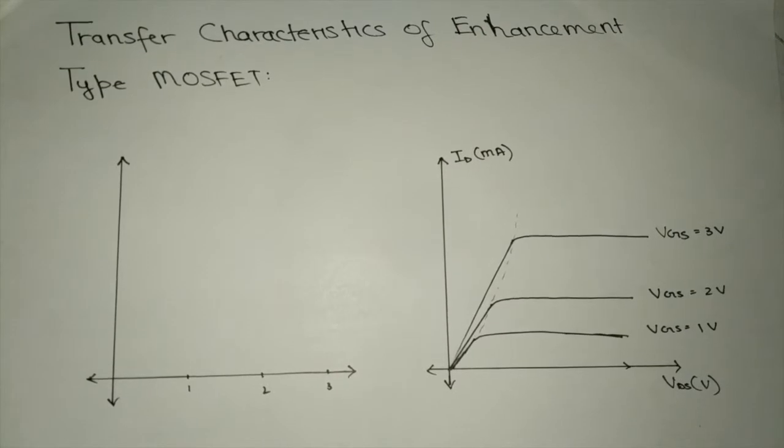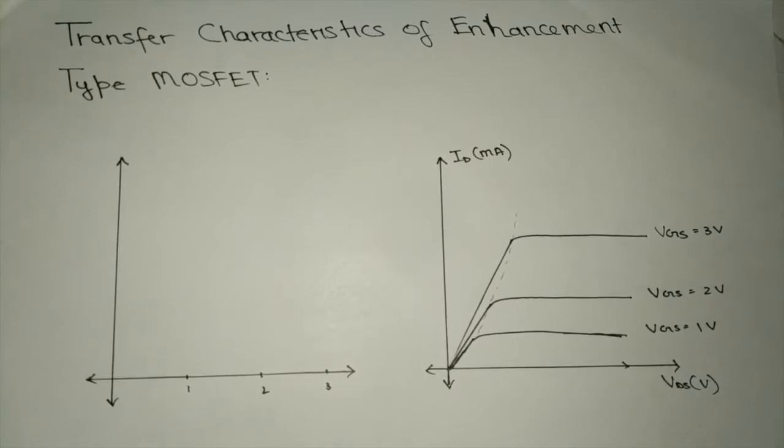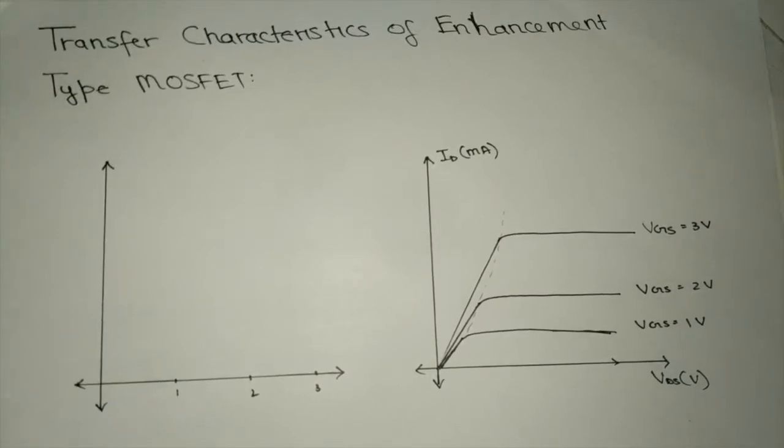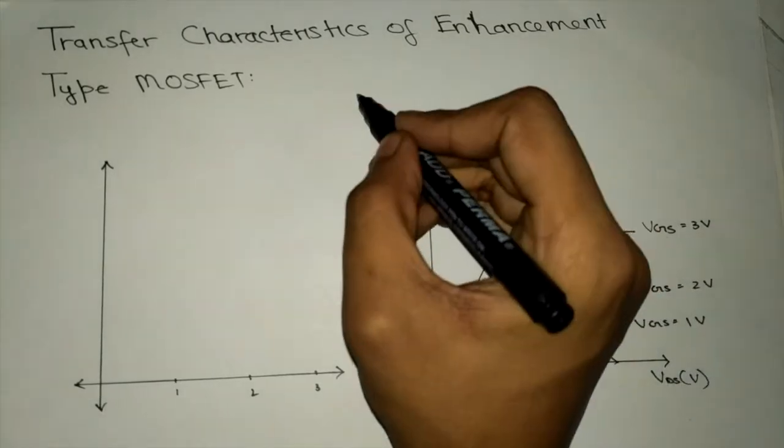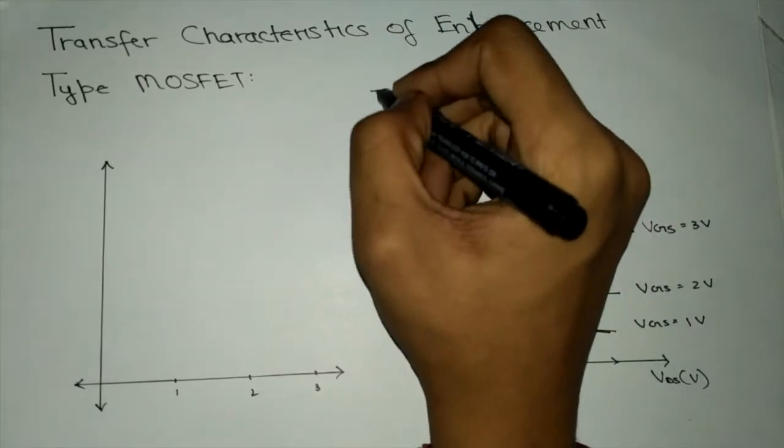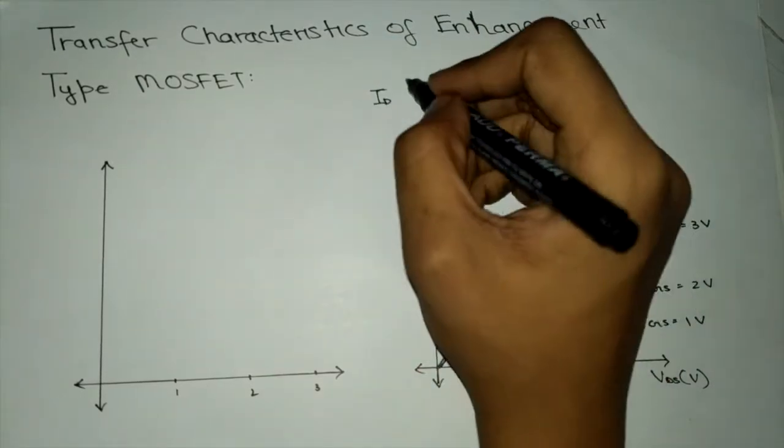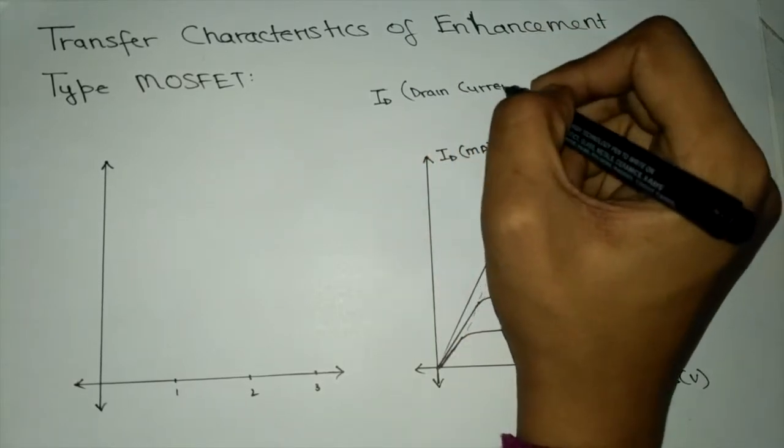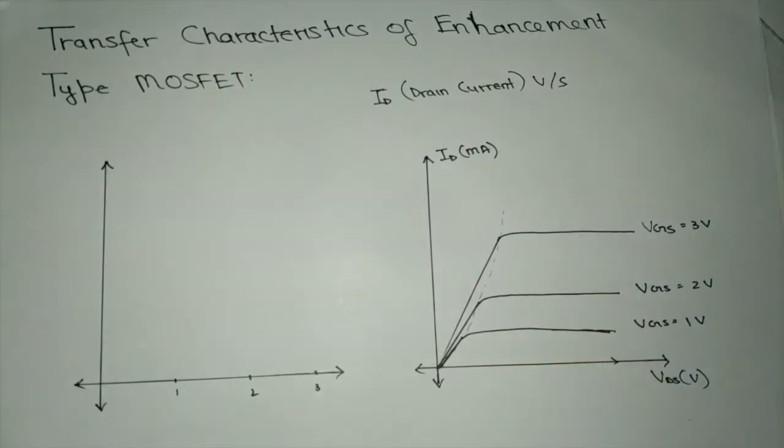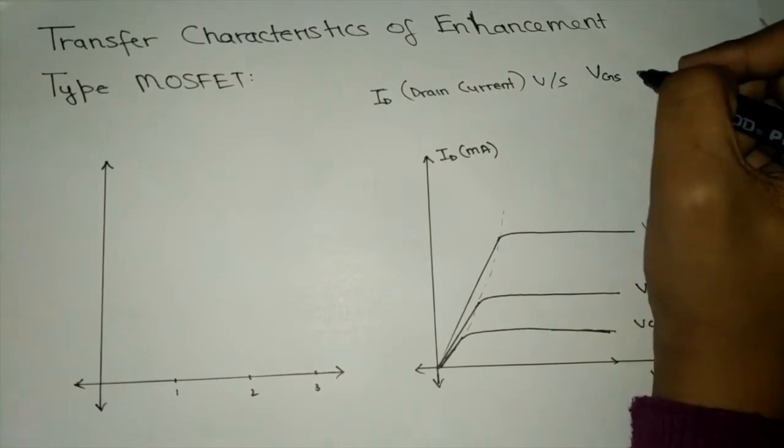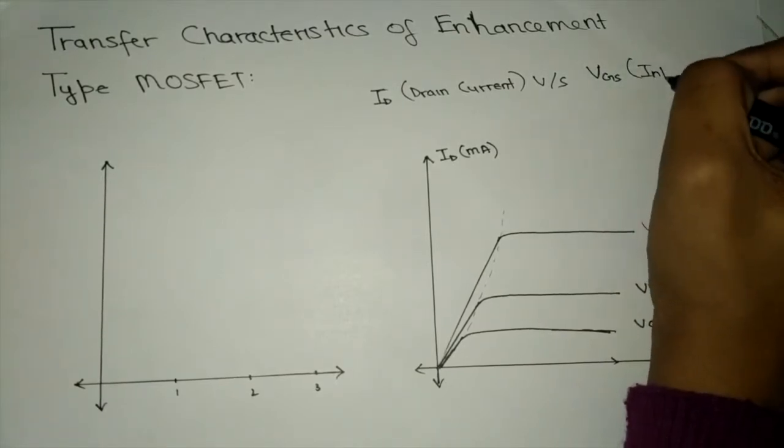Now for the second type of characteristics of MOSFET, that is the transfer characteristic of enhancement type MOSFET. The transfer characteristic is a plot between the drain current, that is the output current, versus the VGS or the gate to source voltage, that is the input voltage.